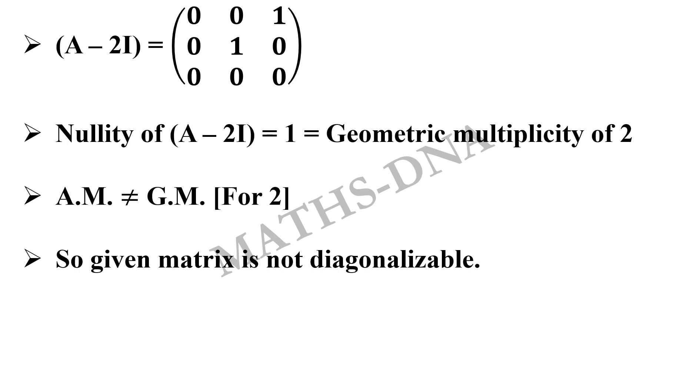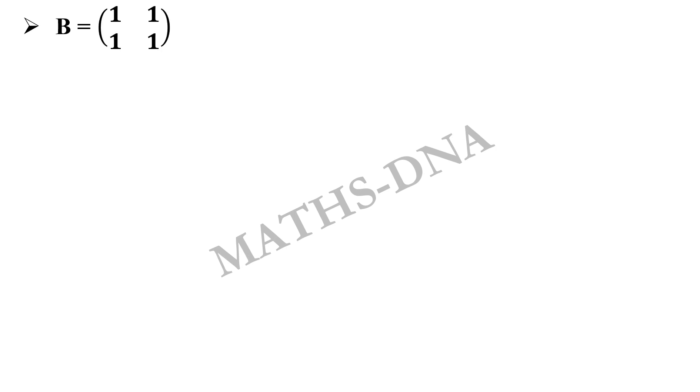But as we are discussing over here, we will also see why are other 3 matrices diagonalizable. So moving on to option B, 1, 1, 1, 1. It is a symmetric matrix and symmetric matrices are always diagonalizable. This is also a result. And remember, when you are attending any exam, you should be good with the results because they help you to eliminate the options directly.